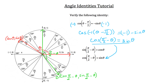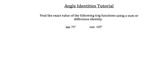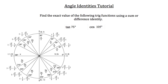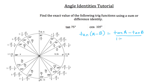Now let's look at another problem. Find the exact value of the following trig functions using a sum or difference identity. Keep the angle identities next to you to help. Let's begin with the tangent of 75 degrees. For this problem I'm going to use a difference identity — specifically the tangent difference identity — and use the unit circle to help show what I'm doing.